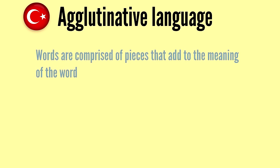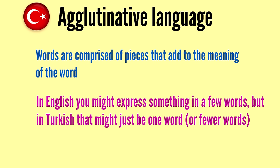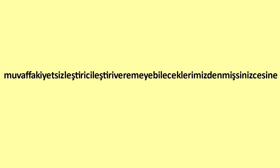Let's look at some features of the Turkish language. Turkish is an agglutinative language, meaning words are comprised of pieces that all add to the meaning. So whereas in English you might express something with a few words, in Turkish that might be just one word — instead of using an extra word, you add an extra piece to the word you're already using. That means you can sometimes get some surprisingly long words in Turkish.